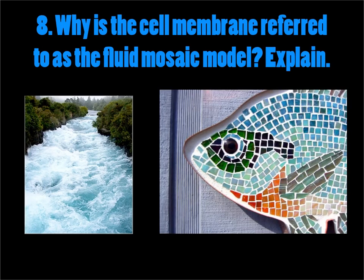Why is the cell membrane referred to as a fluid mosaic model? Fluid, because it's flexible and flowing. Mosaic, because it's a bunch of different things stuck together to make up the entire structure of the cell membrane. Imagine these little tiles here were all the phosphate heads on one side — all sticking together to form the entire structure — with membrane proteins and cholesterol embedded in it. All this stuff sticks together, a bunch of different parts making up the big picture of the membrane, which is a fluid mosaic model — fluid meaning it moves, made of a bunch of stuff stuck together tightly.